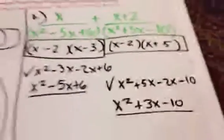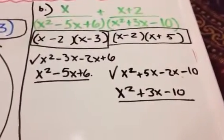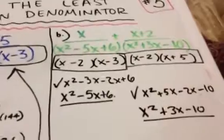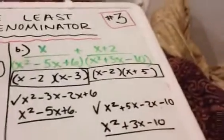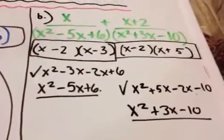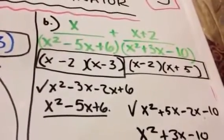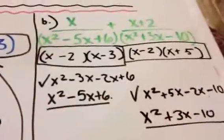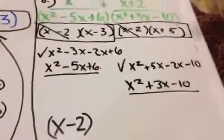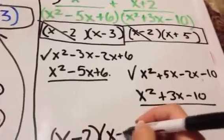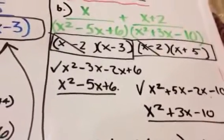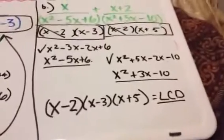For part B, we have these two sets that we factored. When finding the LCD of algebraic expressions, if nothing is in common, you take them all. The two things in common are x minus 2, so we write that. Because this works for both of them. Now we have x minus 3 and x plus 5, so we take both. And that is your LCD.